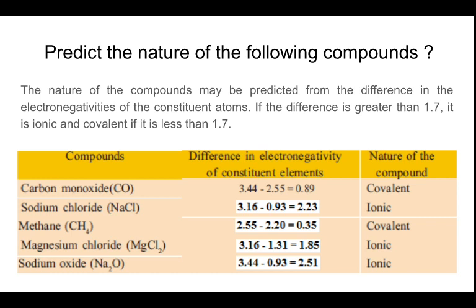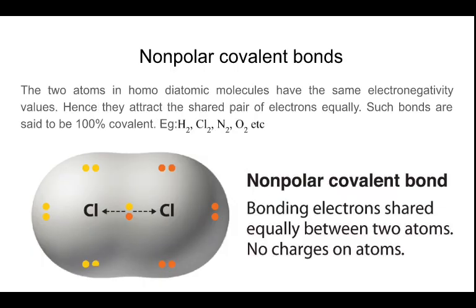The nature of compounds may be predicted from the difference in the electronegativities of the constituent atoms. If the difference is greater than 1.7, it is ionic, and if it is less than 1.7, it is covalent. Some examples are given in the table.